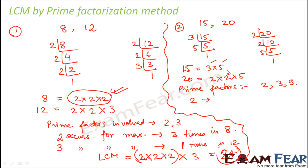So in 15, 2 does not occur at all. And in 20, 2 occurs how many times? 2 times. So 2 occurs maximum 2 times.